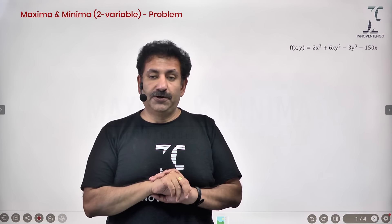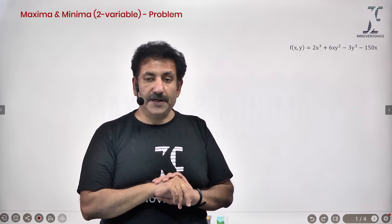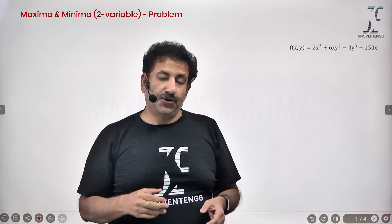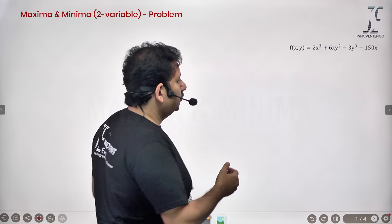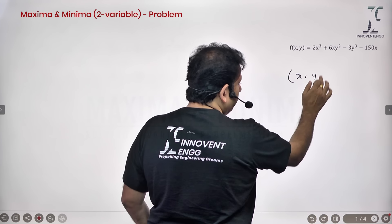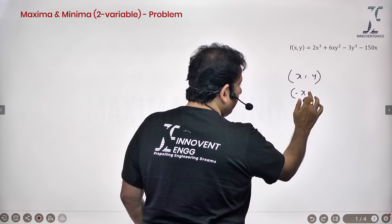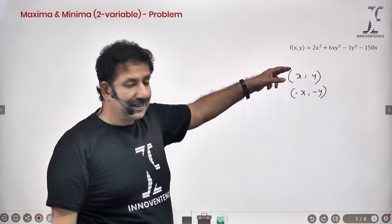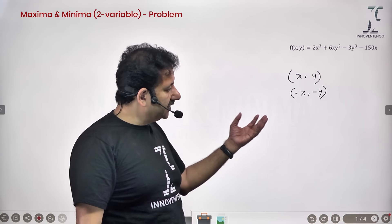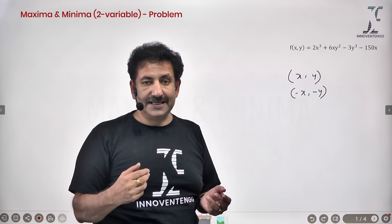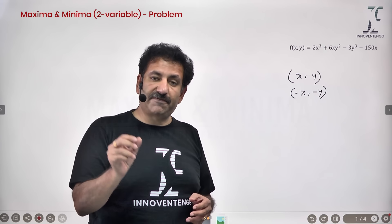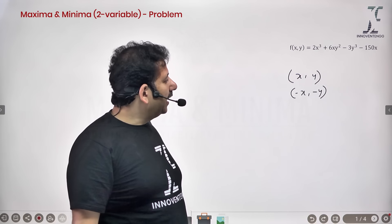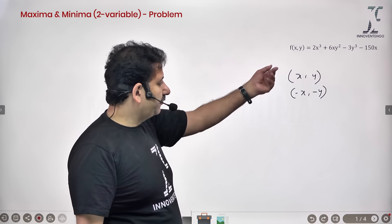Let us try and evaluate one more function for its maxima and minima. One of the things to observe is that this is not a symmetric function. However, one situation could arise where you have the set of points repeated with opposite sign — say, you have (x, y) as one point and also (-x, -y) as another set of points. Then do you have to evaluate the Hessian twice, or would once suffice? That depends on the nature of the determinant of the Hessian in terms of x and y. If the determinant of the Hessian has a symmetric function, then you will have to evaluate it only once.